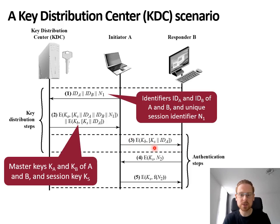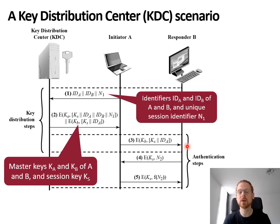B will know this message originated from the key distribution center, as only the key distribution center has access to B's master key. So only B and the KDC will be able to read what's inside. At this point, after step 3, both A and B are already sharing a session key KS.